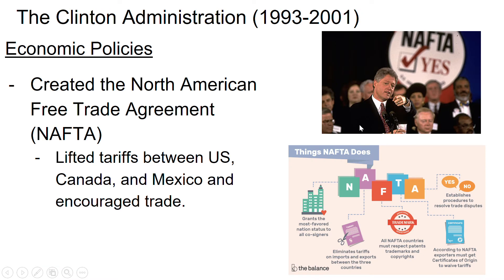We're going to talk about basically his policies that he enacted when he was president. The first one you're going to hear about — and this was in the news recently quite a bit — is NAFTA, the North American Free Trade Agreement. This is an agreement which basically removed all trade barriers and tariffs between the United States, Canada, and Mexico. For the first time, we were not charging Mexico to send products in and they were not charging us to send products to them. This also opened the door to many new trading abilities for different companies in America and for farmers in America.